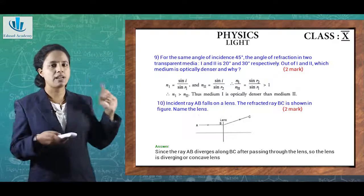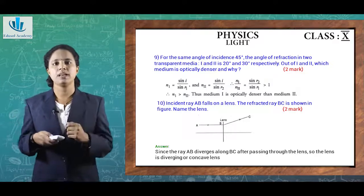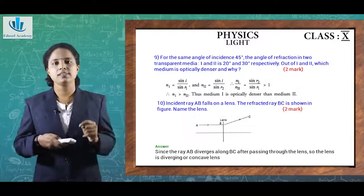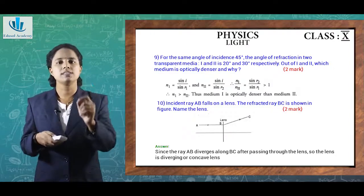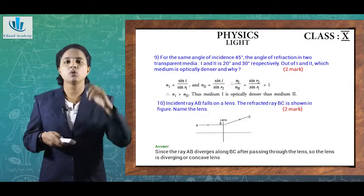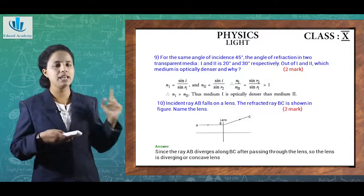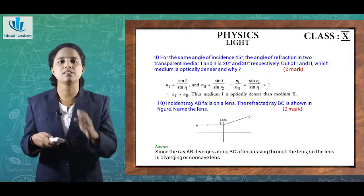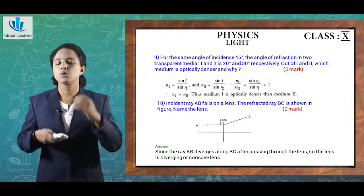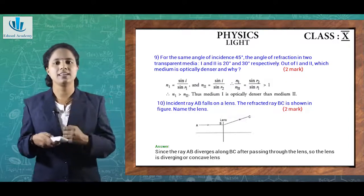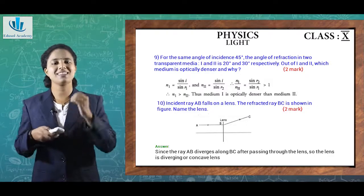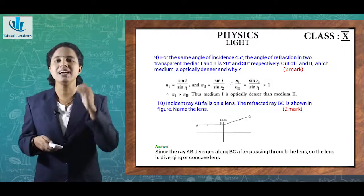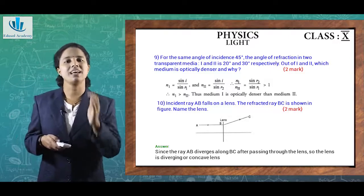Next question: incident ray AB falls on a lens and the refracted ray is shown as BC, which diverges. A diverging lens is a concave lens, so we can easily identify that this lens is a diverging or concave lens.